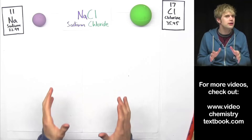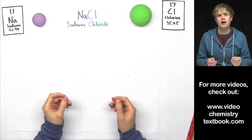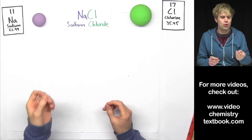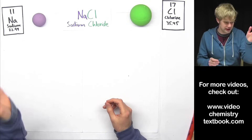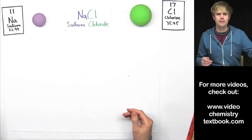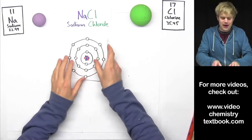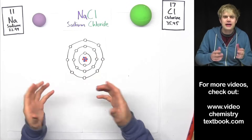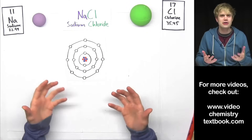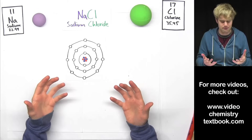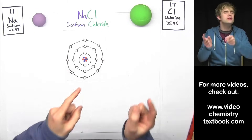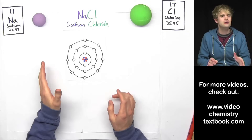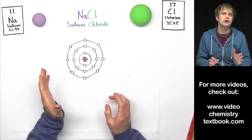In order to really understand what's going on in ionic bonding, we have to take a look at the individual electrons that live in sodium and live in chlorine. As you probably know, there are specific places in an atom where electrons can live. I have a diagram of this here. If this is new, you should check out my video called Valence Electrons and the Periodic Table.